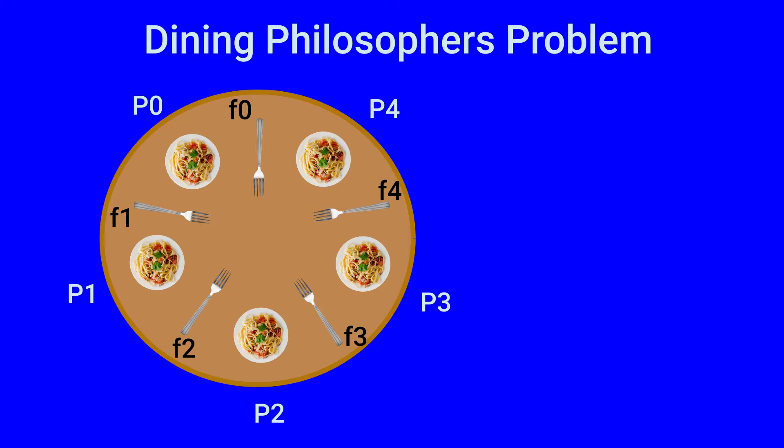So philosopher p3 gets fork f4 in addition to fork f3 and philosopher p3 can eat. The circle of wait condition has been broken and there is no deadlock.